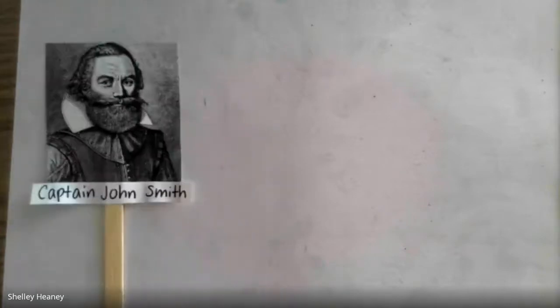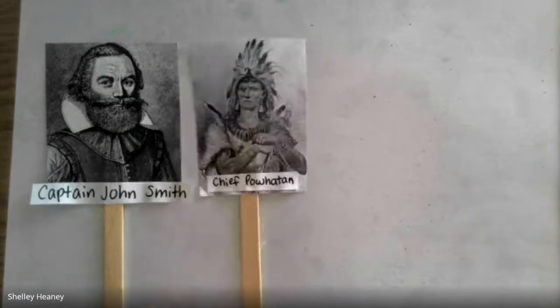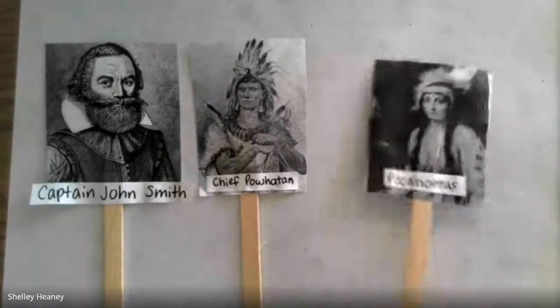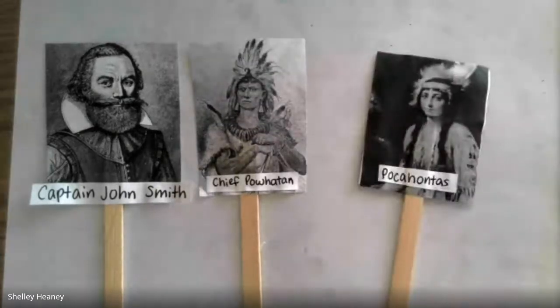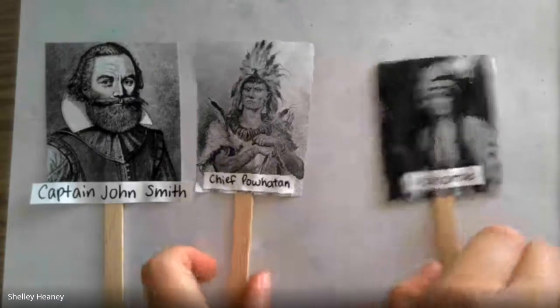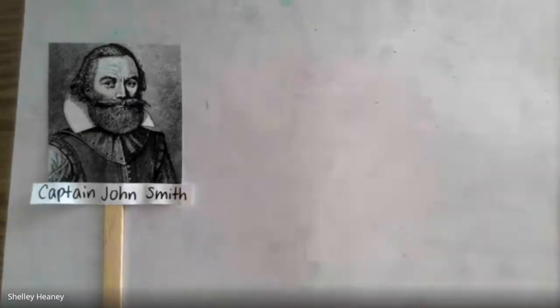Hi everybody, my name is Miss Heaney and today we are continuing the story of Jamestown. Today we are talking about three very important people: John Smith, Chief Powhatan, and Pocahontas.